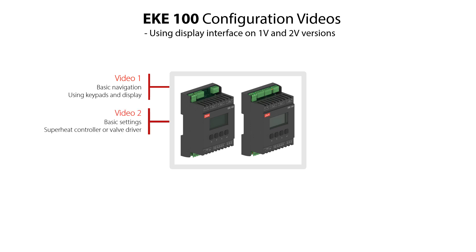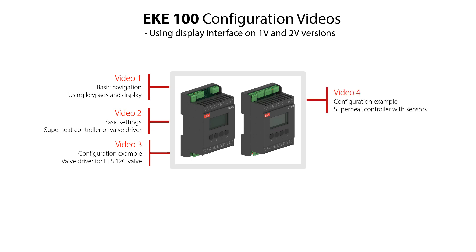Video 2 shows how to do basic settings, including configuring the EKE100 as a superheat controller or a valve driver. Video 3 shows how to configure the EKE100 as a valve driver for one stepper motor valve. Video 4 shows how to configure the EKE100 as a superheat controller for one stepper motor valve, including configuration of one pressure transmitter and one temperature sensor. And Video 5 shows how to configure the EKE100, allowing you to manually operate a valve.